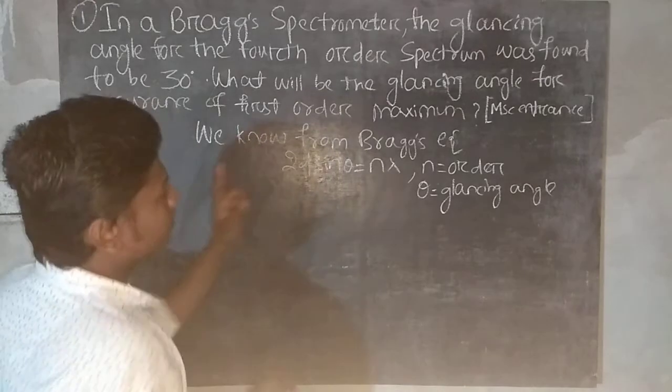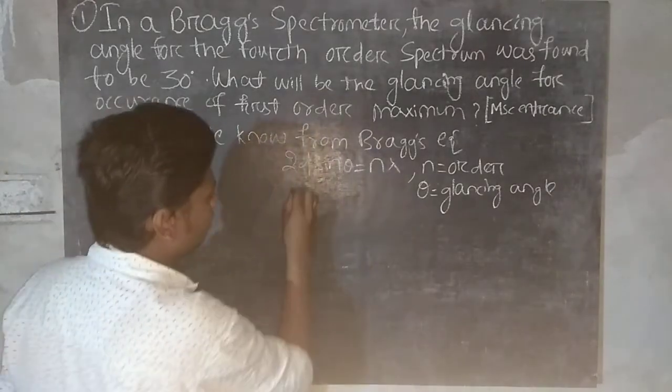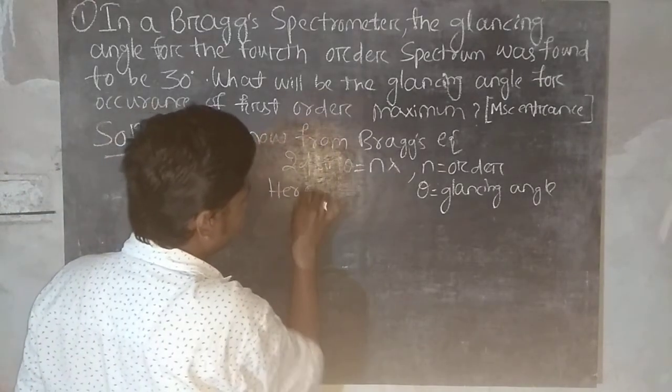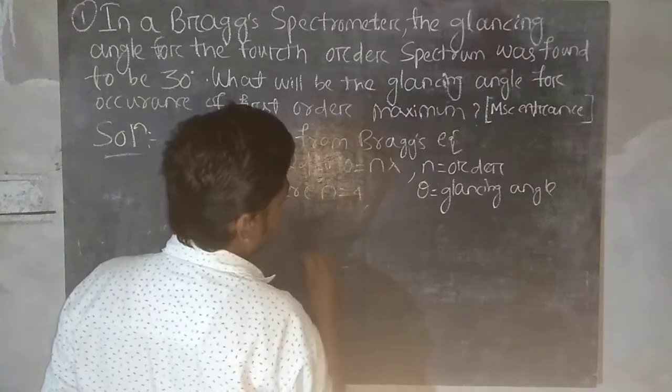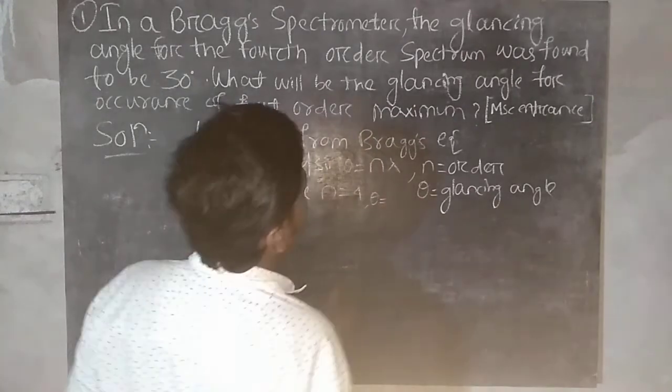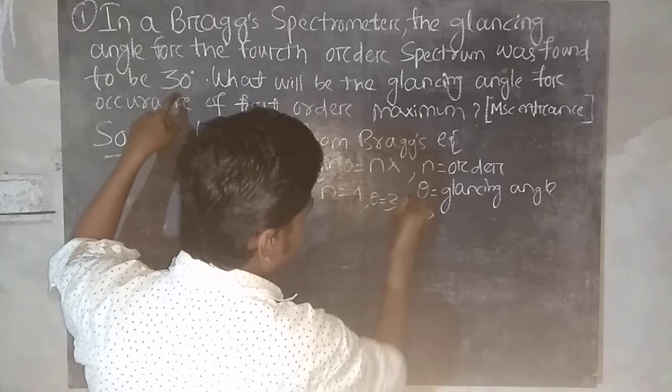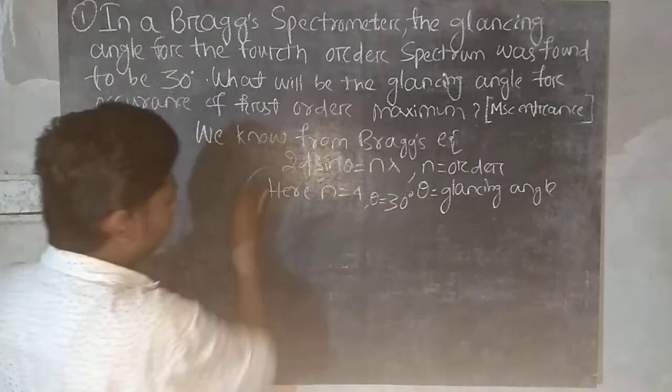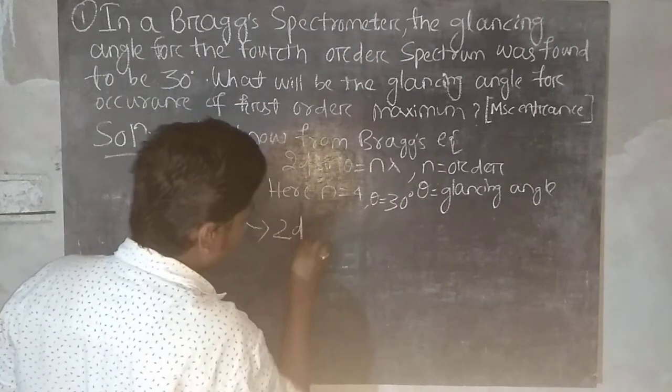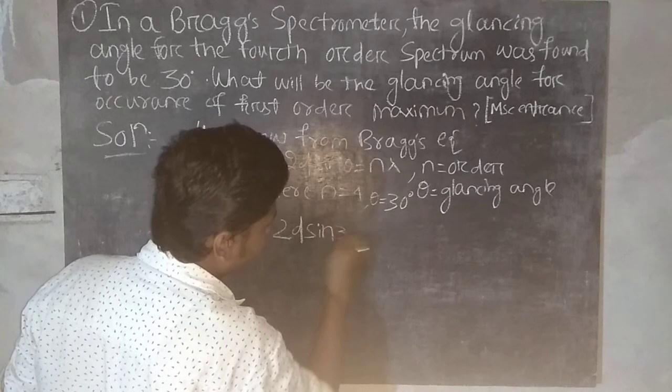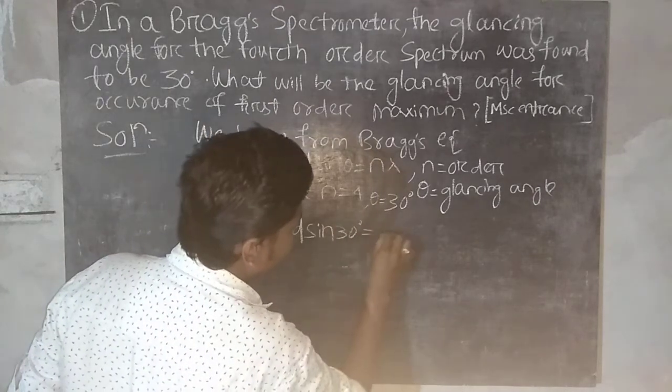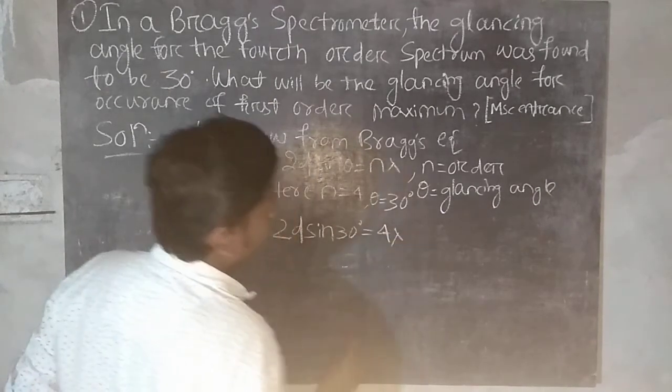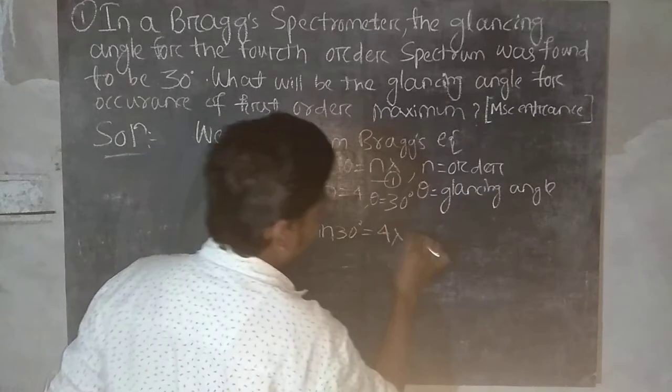We are given that it is fourth order. So here we have to put n equal to 4 and theta will be given as 30 degrees. So this equation becomes 2d sin 30 degrees equals 4 lambda. This is equation 1 and this is equation 2.